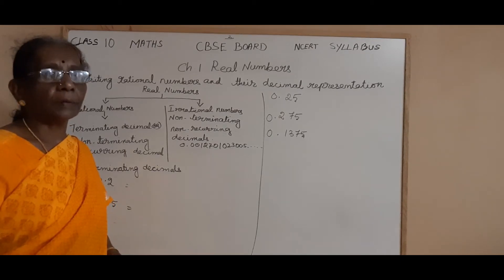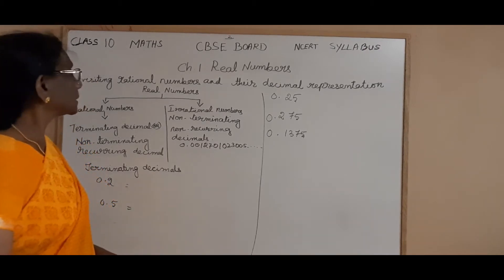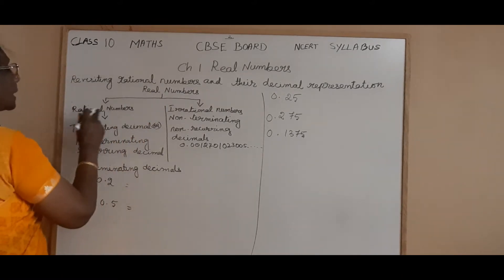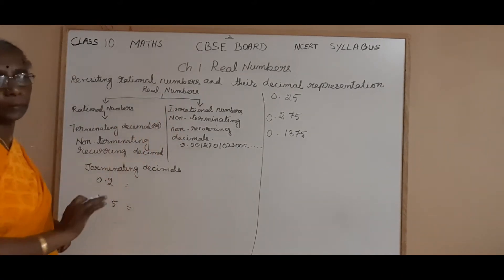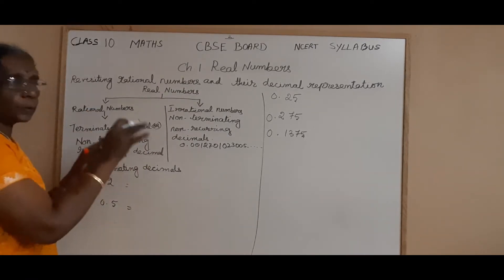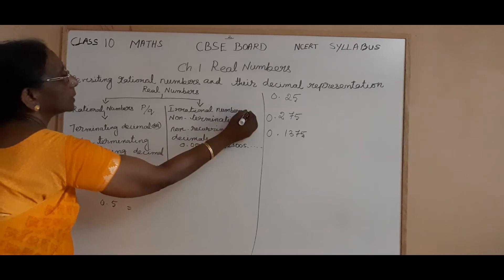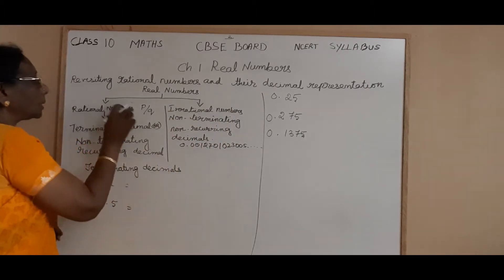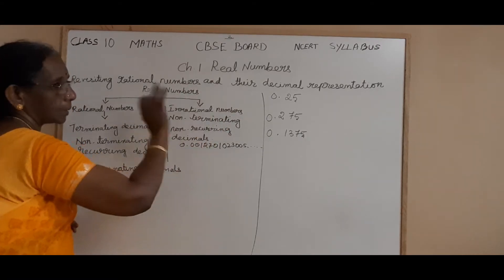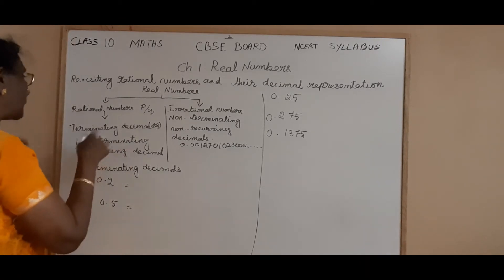Isn't it, children? Now we are going to have a small recap and then we will revisit the rational numbers. So here, real numbers — rational numbers and irrational numbers together form real numbers. All of you know that. When expressed in the form P by Q, that is a rational number; and when it cannot be expressed in the form P by Q, where P and Q are co-prime and Q is not equal to zero, we cannot represent that as a rational — that is irrational.